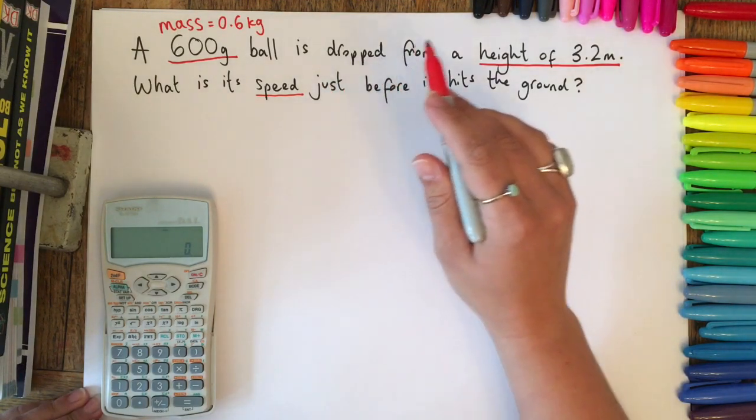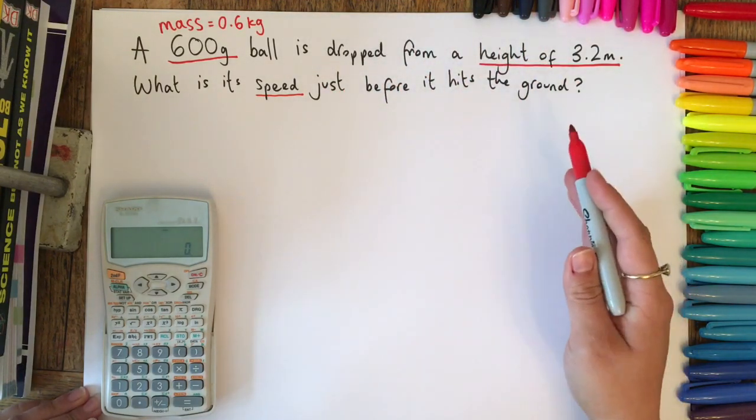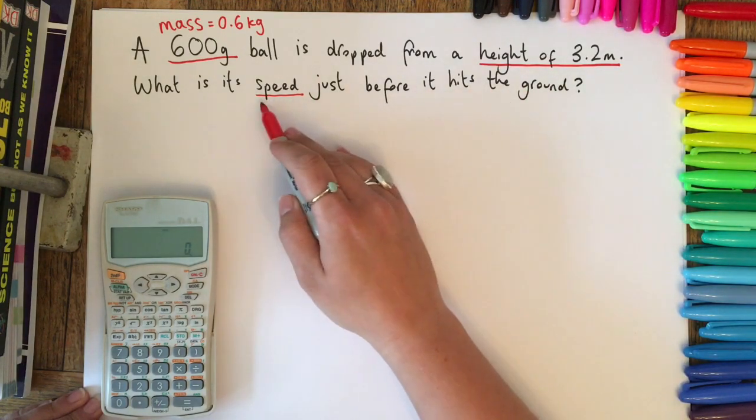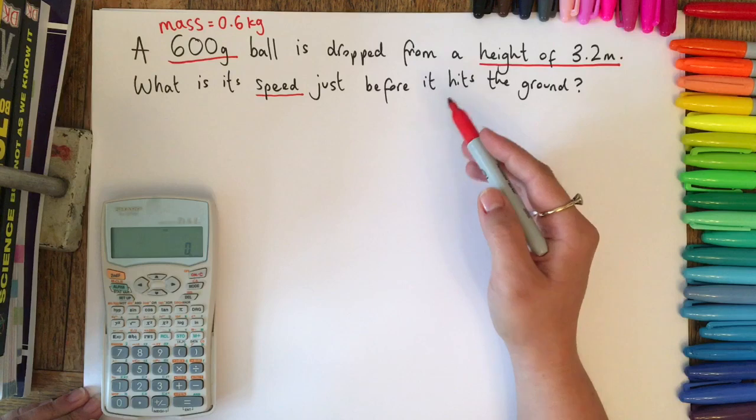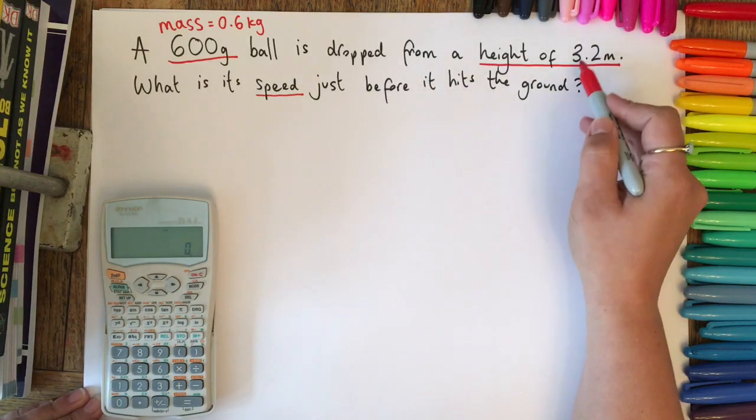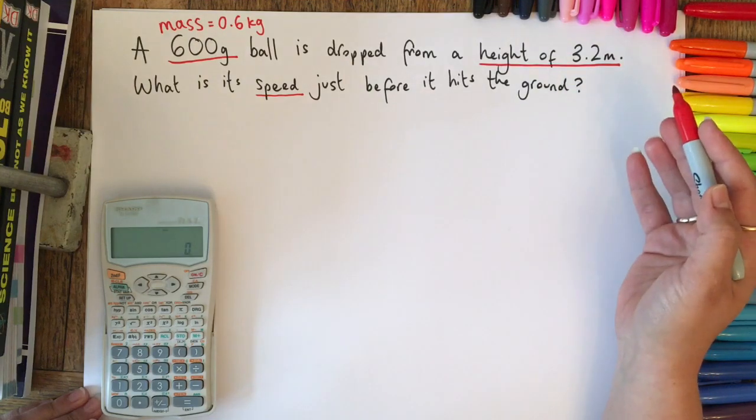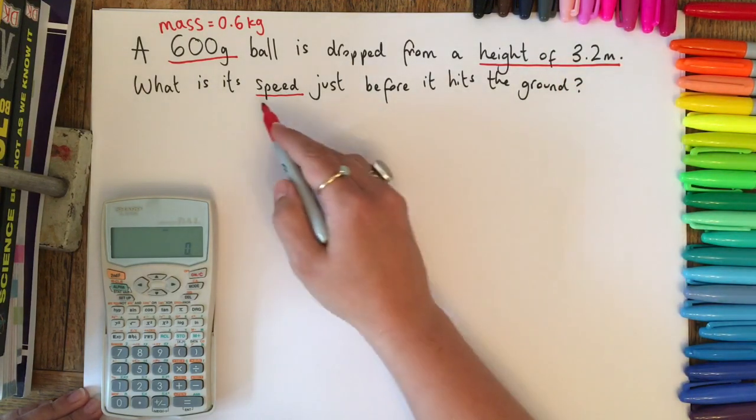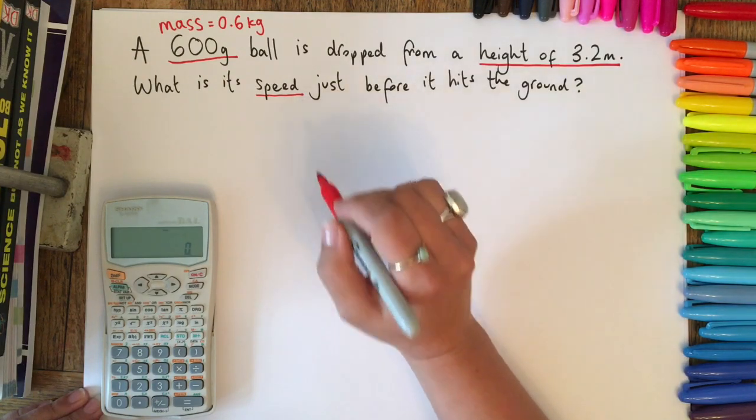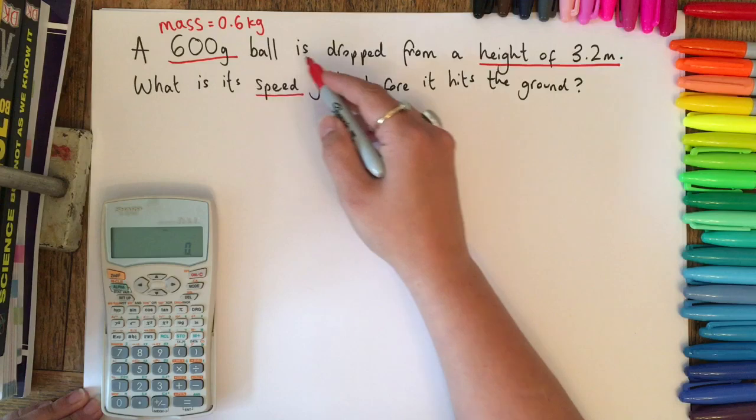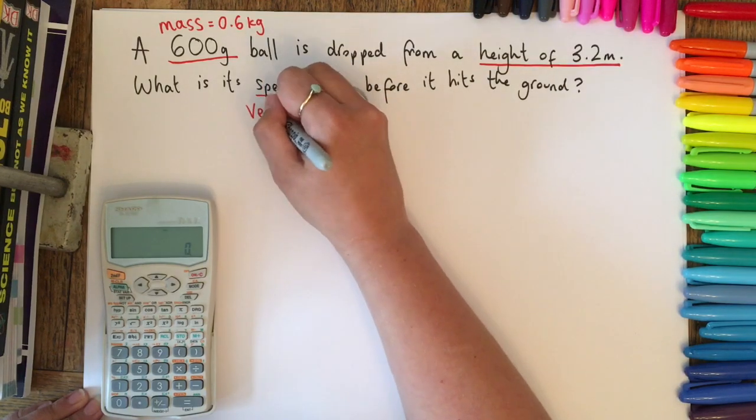It says what is its speed just before it hits the ground. The most common mistake with this sort of question is that people say 'oh it's asked me to calculate speed, I know that the equation for speed is speed equals distance divided by time, I've got something in meters so that's a distance but I haven't got a time, I don't know how to answer this question.' Actually, whilst you are calculating speed, you need to think about other words that mean a similar thing to speed, and that is velocity.